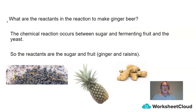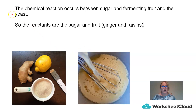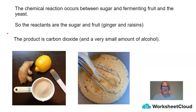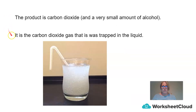What would the reactants be if you were making ginger beer? Remember that the chemical reaction occurs between the sugar in the fermenting fruit and the yeast. So the reactants are going to be the sugars in the fruit. Here we have the sugar, here we have the fruits we are adding, and here we have the yeast. When we add them all together, we start to get some bubbles. The product is carbon dioxide, and if you are using ginger, a very, very small amount of alcohol.